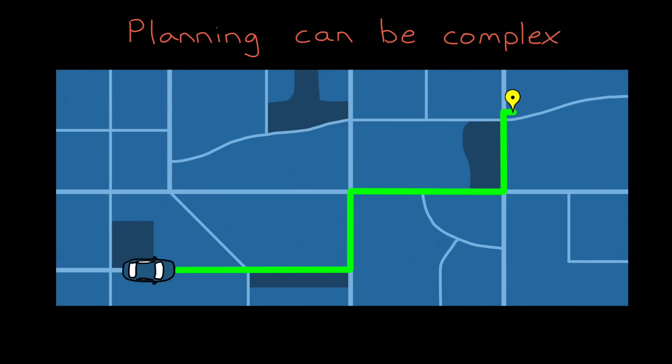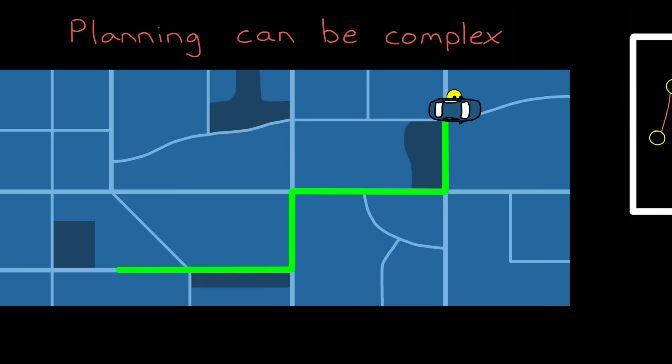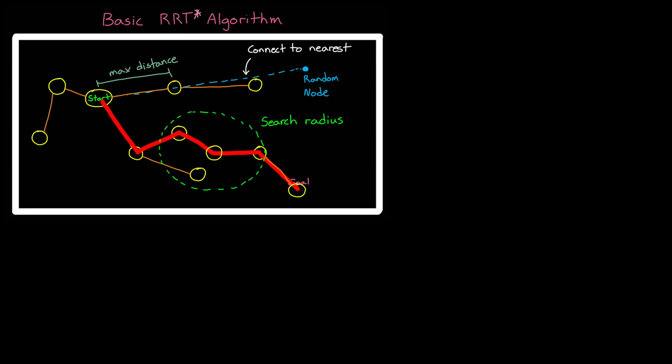You know, it doesn't accelerate too fast, or it doesn't turn too quickly. And if there are passengers, then planning has to account for their comfort and safety as well. And only after the plan has been created can the controller then generate the commands to follow it. An example of two different graph-based planning methods are rapidly expanding random trees, RRT and A star.